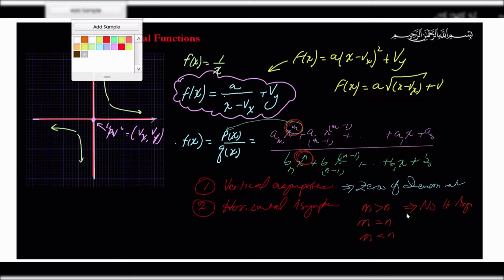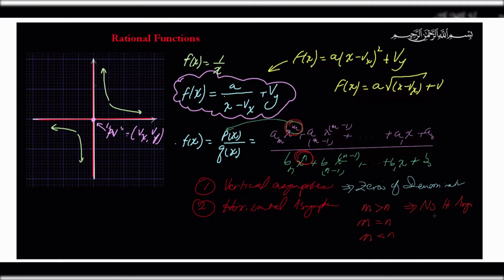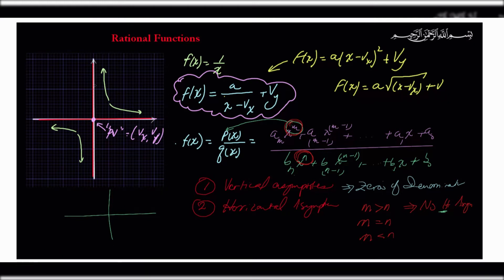Today we're going to elaborate on this because some of you weren't there. A function can have vertical asymptotes, it can have horizontal asymptotes, and as we discovered today, it can also have slanted asymptotes — also called slant or oblique asymptotes. When m is greater than n, that does not mean there are no oblique asymptotes. Your function could have slanted or oblique asymptotes.